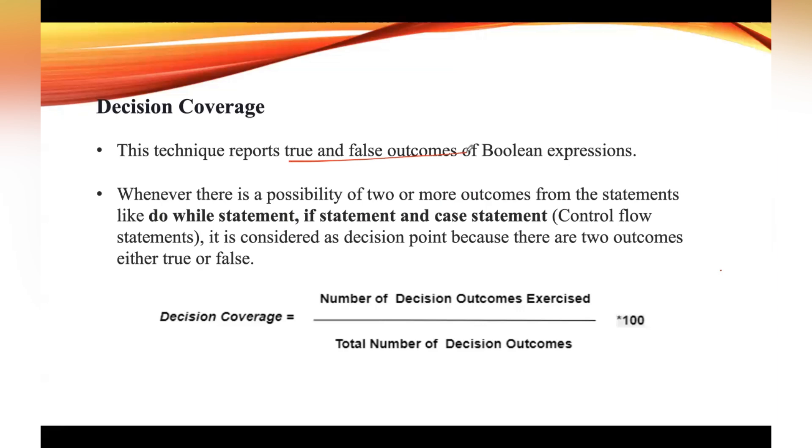This decision coverage covers all possible outcomes by using control flow graph or chart. A decision point has two decision values: one is true and the other is false. That's why most of the time the total number of outcomes will be two. The percentage of decision coverage can be written as a formula: dividing the number of decision outcomes exercised by total number of decision outcomes.